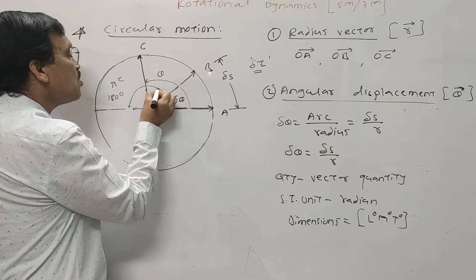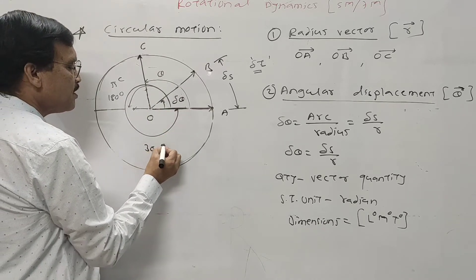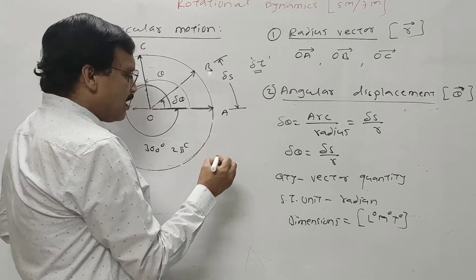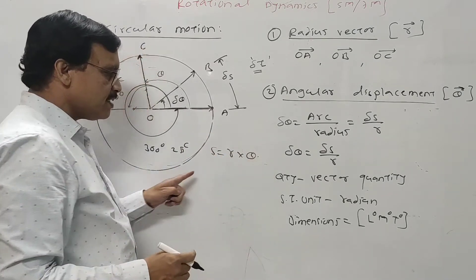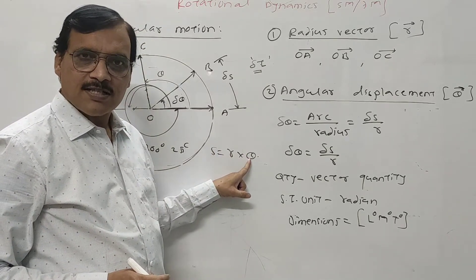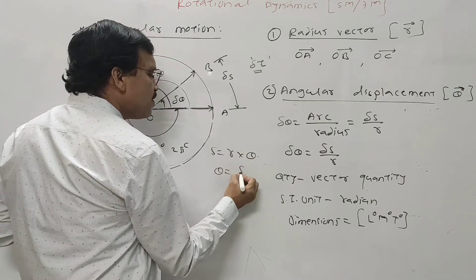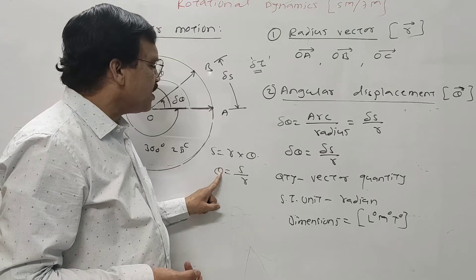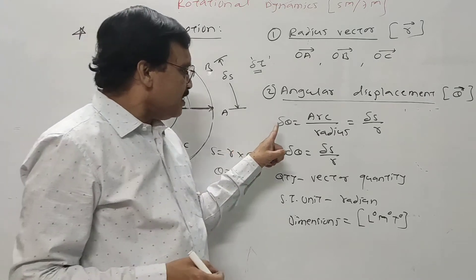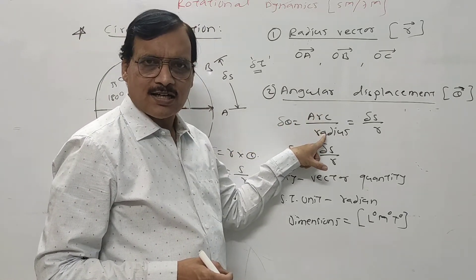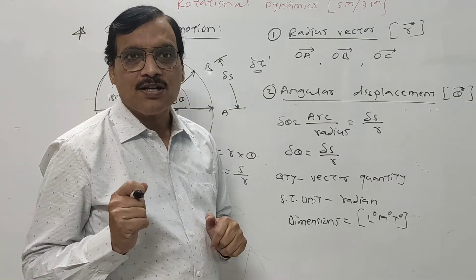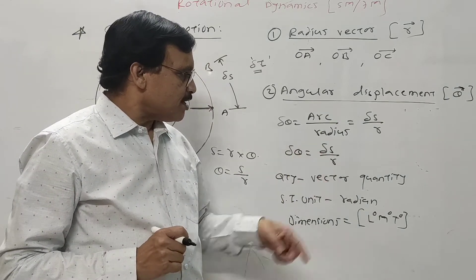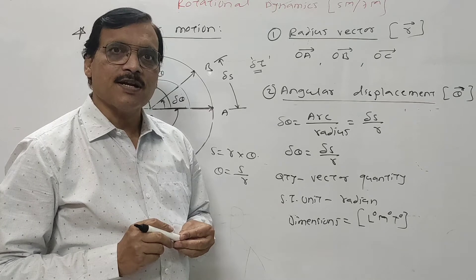If the particle completes half a circle, angular displacement is 180 degrees, which equals pi radians. If the particle completes one full circle, angular displacement is 360 degrees, equal to 2 pi radians. Angular displacement can also be given by the formula: delta theta equals delta S upon R, where S is the arc length and R is the radius.